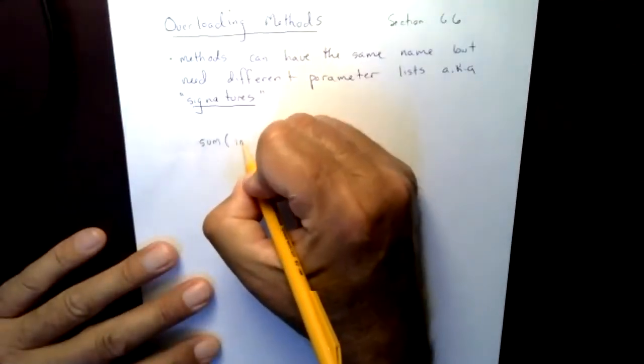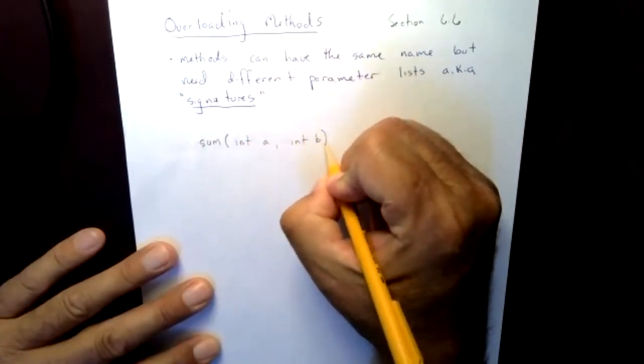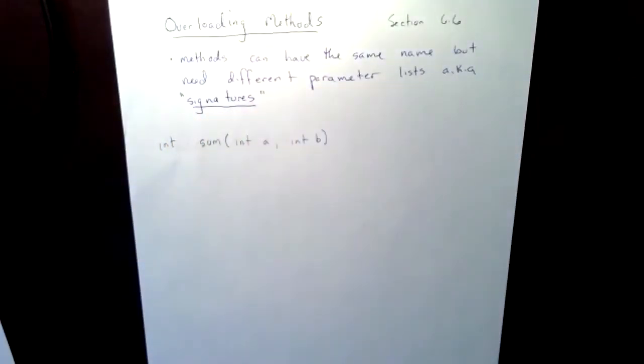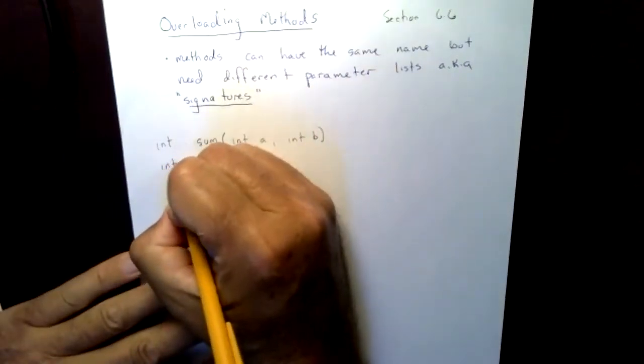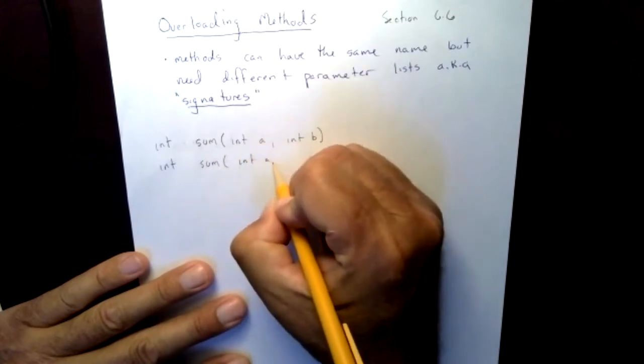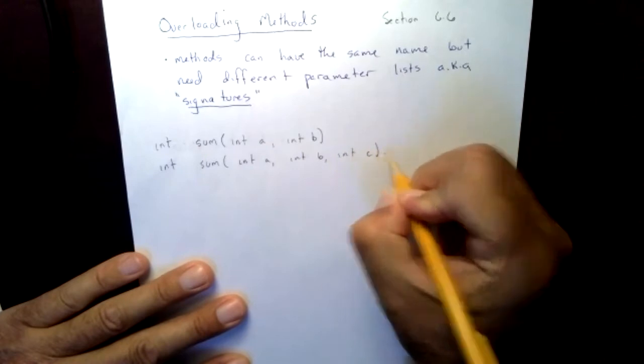Two, right? I may say something like int A and int B, and I might have a return type that would be an int. Okay, so that's great. I wrote sum, and could I do this? Could I have a method called sum, and I have int A, int B, and int C? Same name, but different parameter lists, different signatures.